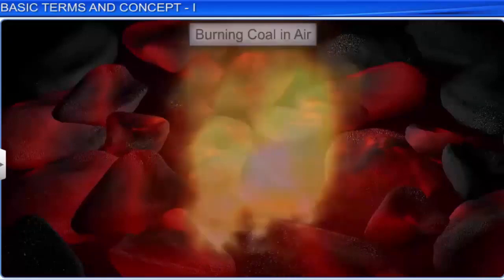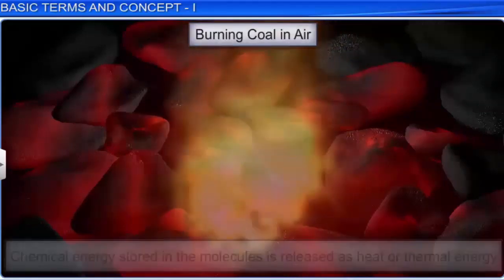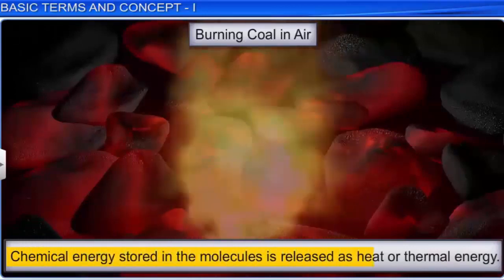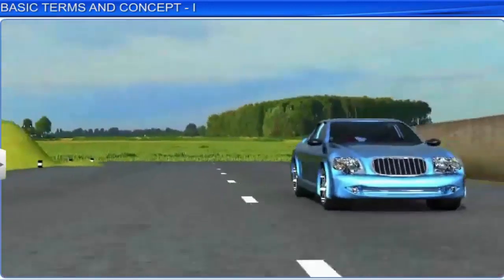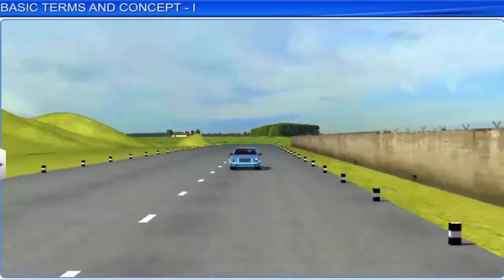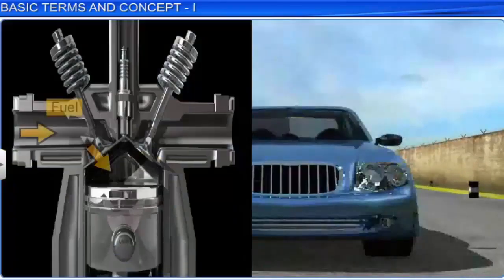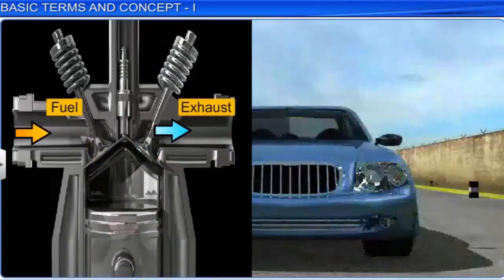Before we begin, let's look at examples of some common chemical reactions, like the burning of coal. When coal is burned, the chemical energy stored in the molecules is released as heat or thermal energy. Another example is the burning of fuel in a car engine. When the fuel burns in an engine, it converts the chemical energy to mechanical energy, propelling the car to move along the road.